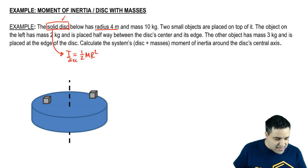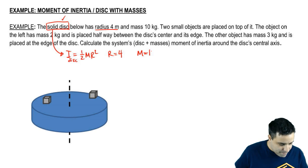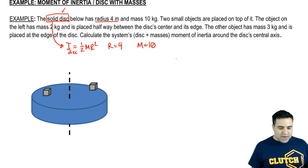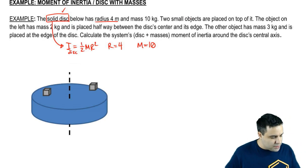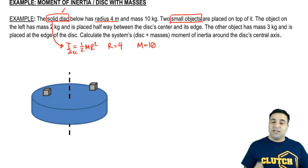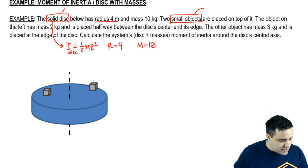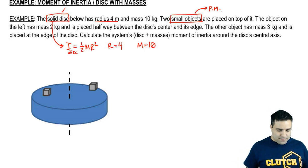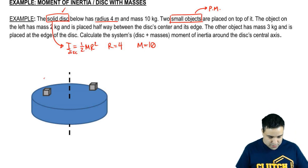I'm also given that it has a radius of 4, so r equals 4, and a mass of 10. And then we're going to add two small objects on top of it. The fact that it's saying two small objects, and it's not giving you a shape for the object, it's an indication that these are going to be treated as point masses. And these are the two objects here.